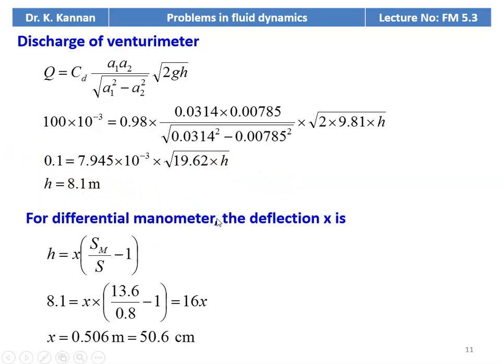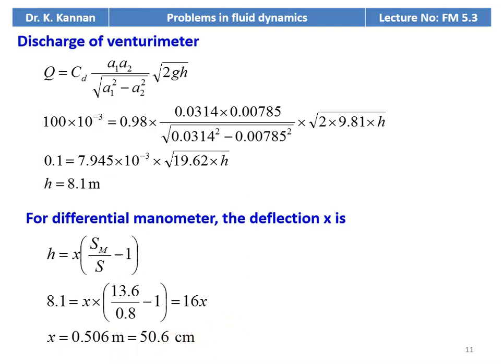For the differential manometer, the deflection X relates to head by: H equals X into (SM divided by S minus 1). SM is specific gravity of manometric fluid mercury equals 13.6, S is specific gravity of oil equals 0.8. So 8.1 equals X into (13.6 divided by 0.8 minus 1) equals 16X. Therefore X equals 0.506 meter or 50.6 centimeter. The manometer deflection is 50.6 centimeter.